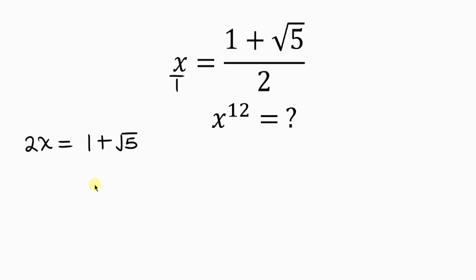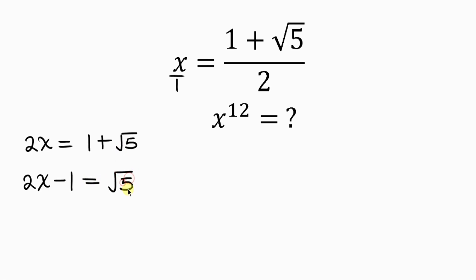Our next step would be to isolate the square root of 5, and we do that by moving 1 to the left-hand side. So we have 2x, and when 1 crosses to the left it becomes minus 1, and this is equal to the square root of 5.